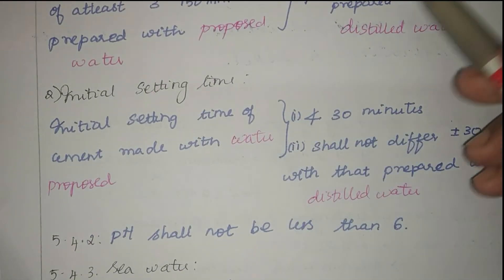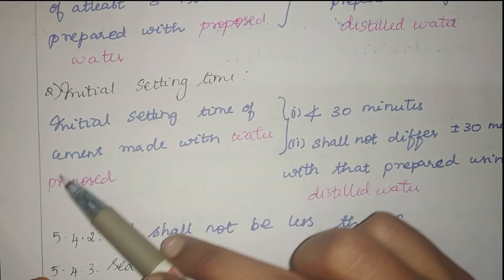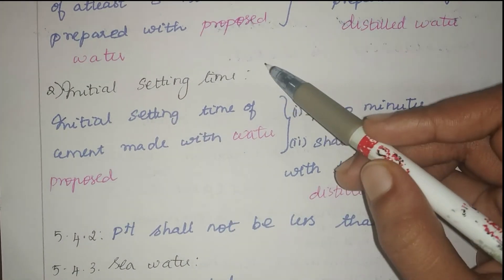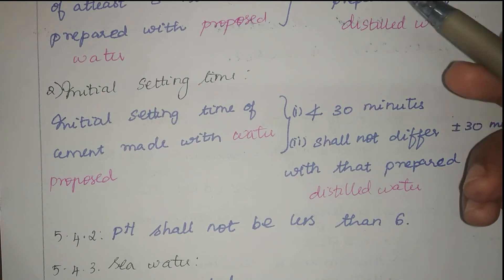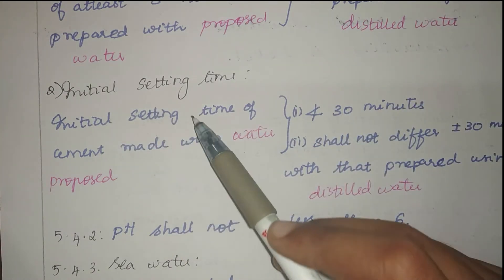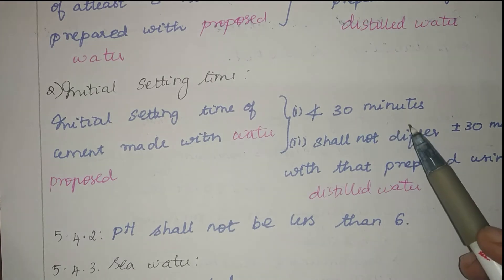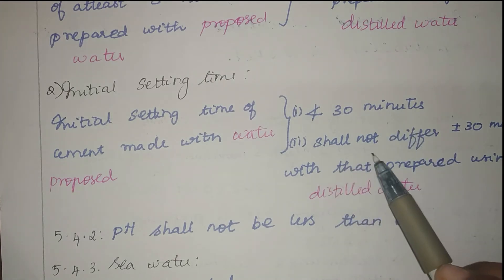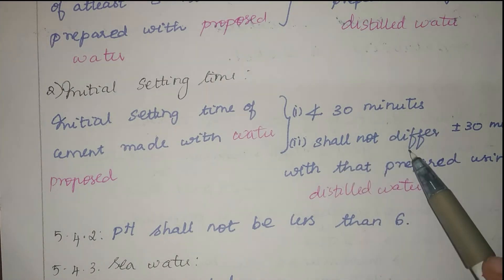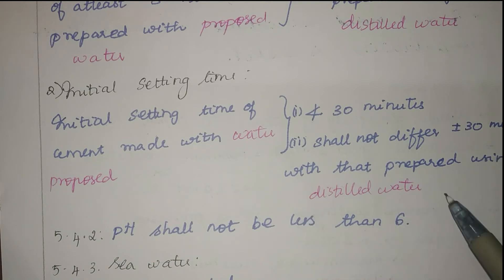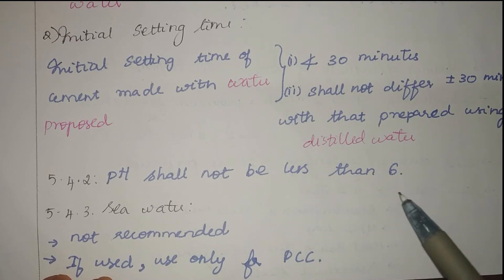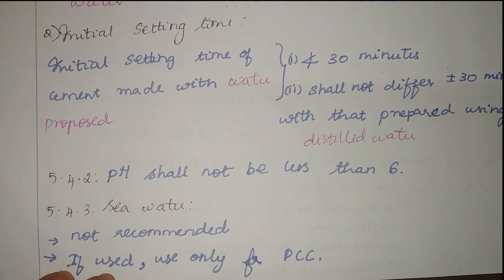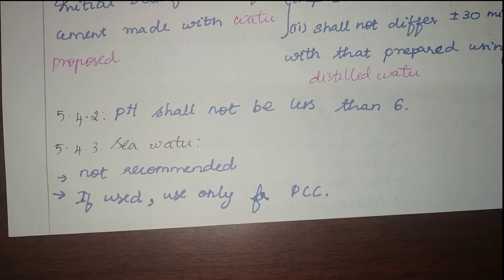Water quality can also be estimated using initial setting time — this is a quicker method, avoiding the 28-day wait. We measure the initial setting time using the given water; it should not be less than 30 minutes and shall not differ by more than ±30 minutes from that prepared using distilled water. The pH of water shall not be less than 6, as below 6 it becomes acidic.